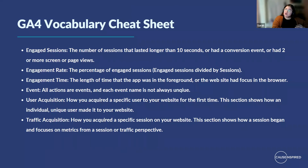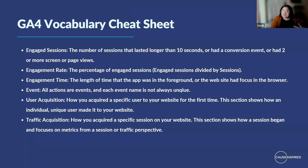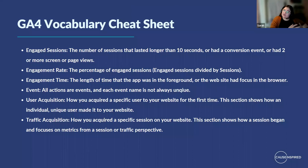You also have Engagement Time, which does the same exact thing — it tells you how long a user has been on your site once they were engaged. Events are tracking all of the actions that you saw on your site. User Acquisition, like we said earlier, is how you acquired a user for the first time on your site, versus Traffic Acquisition, which is how you acquired a session on your site. So you can think about it as: User Acquisition is for unique users, Traffic Acquisition is for any session.